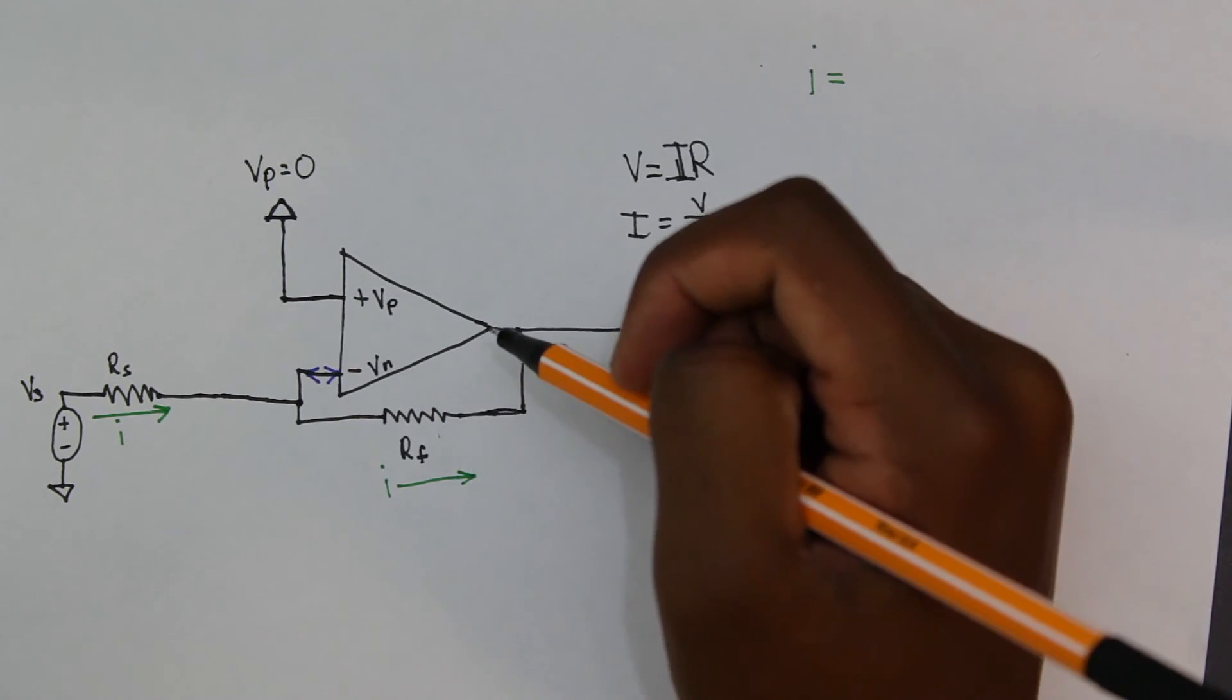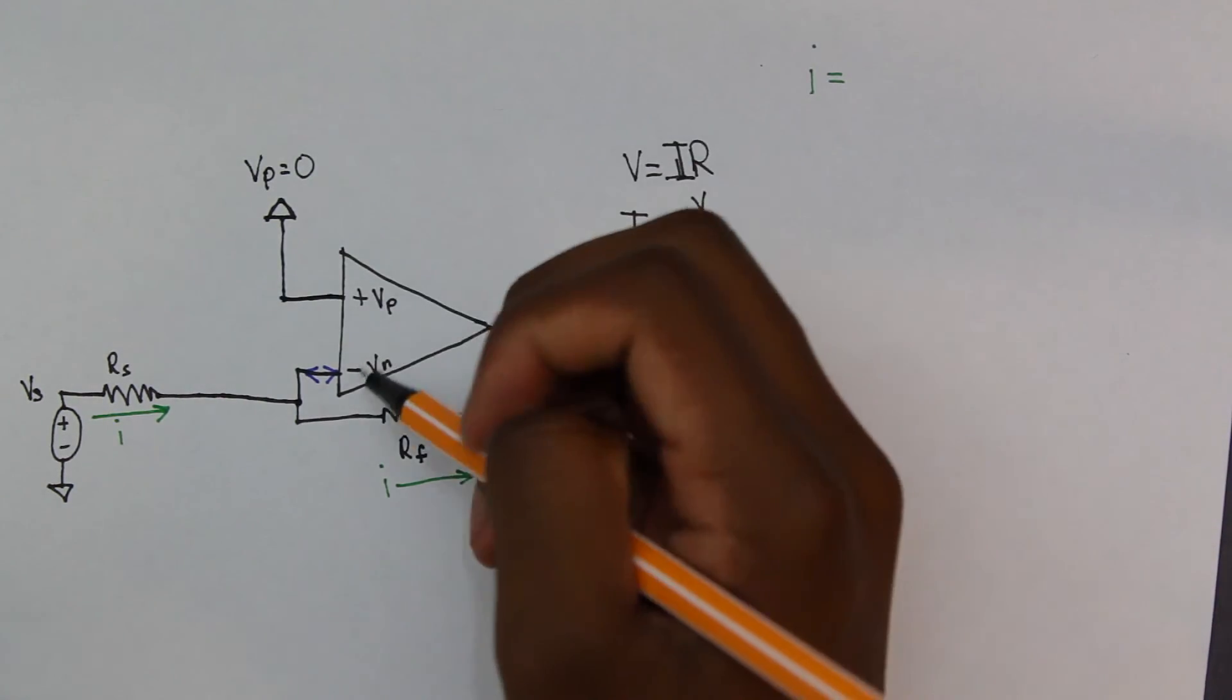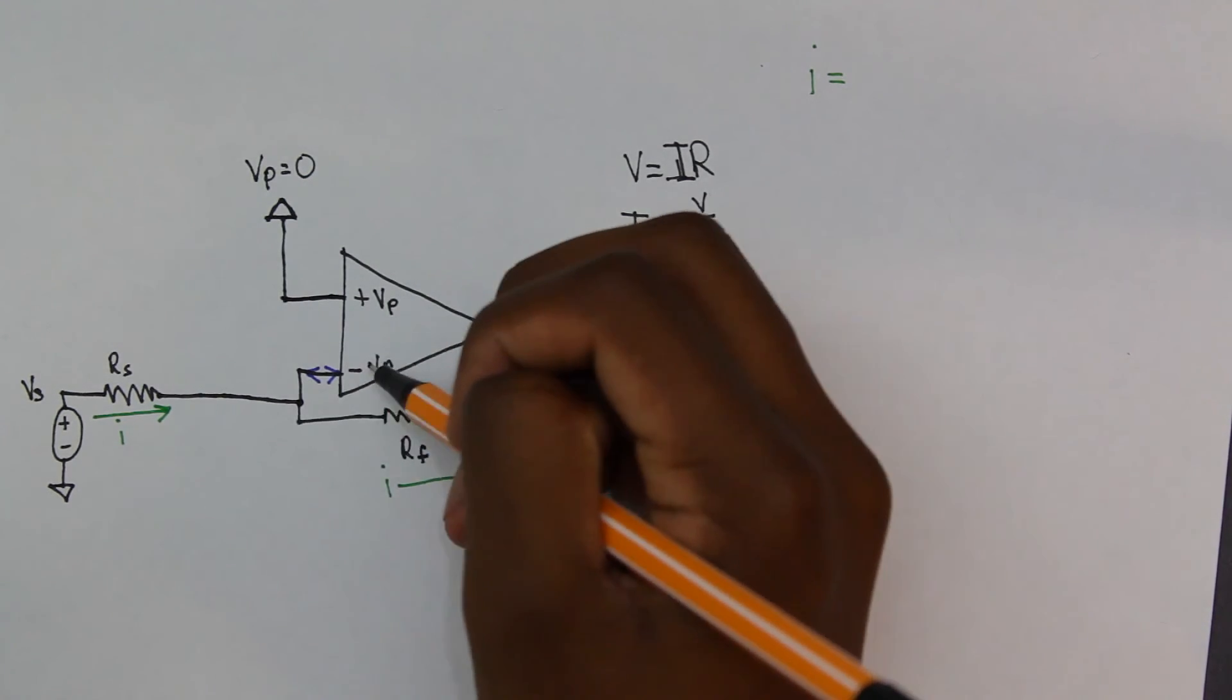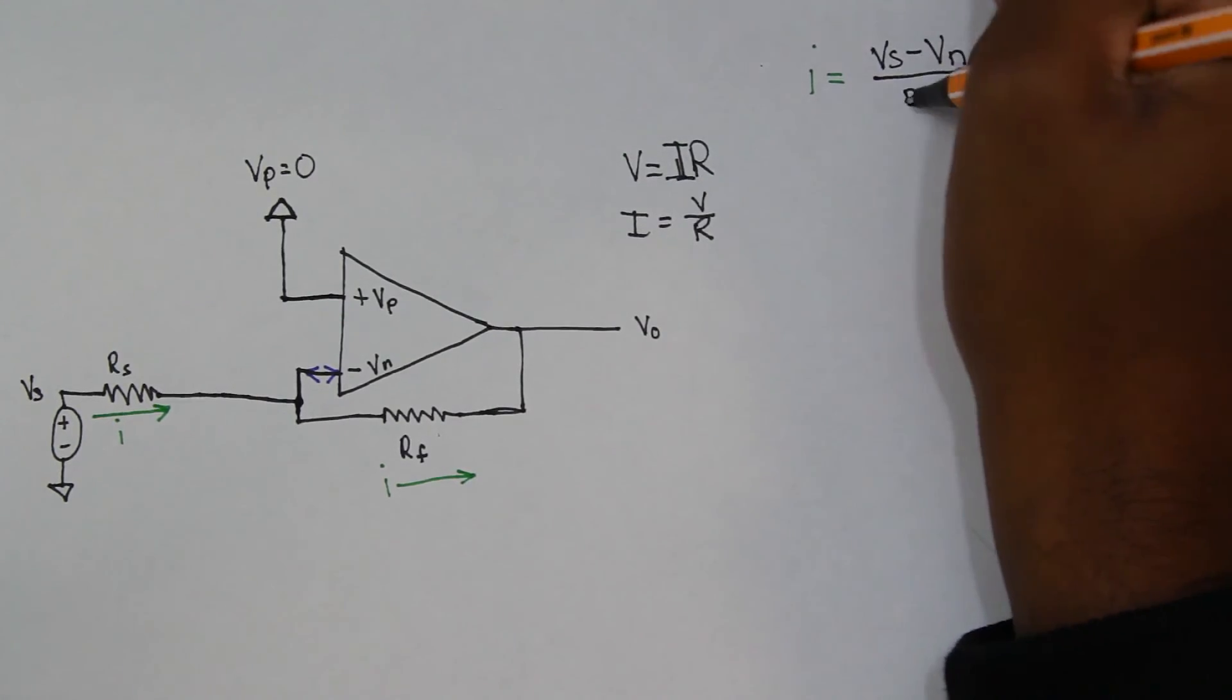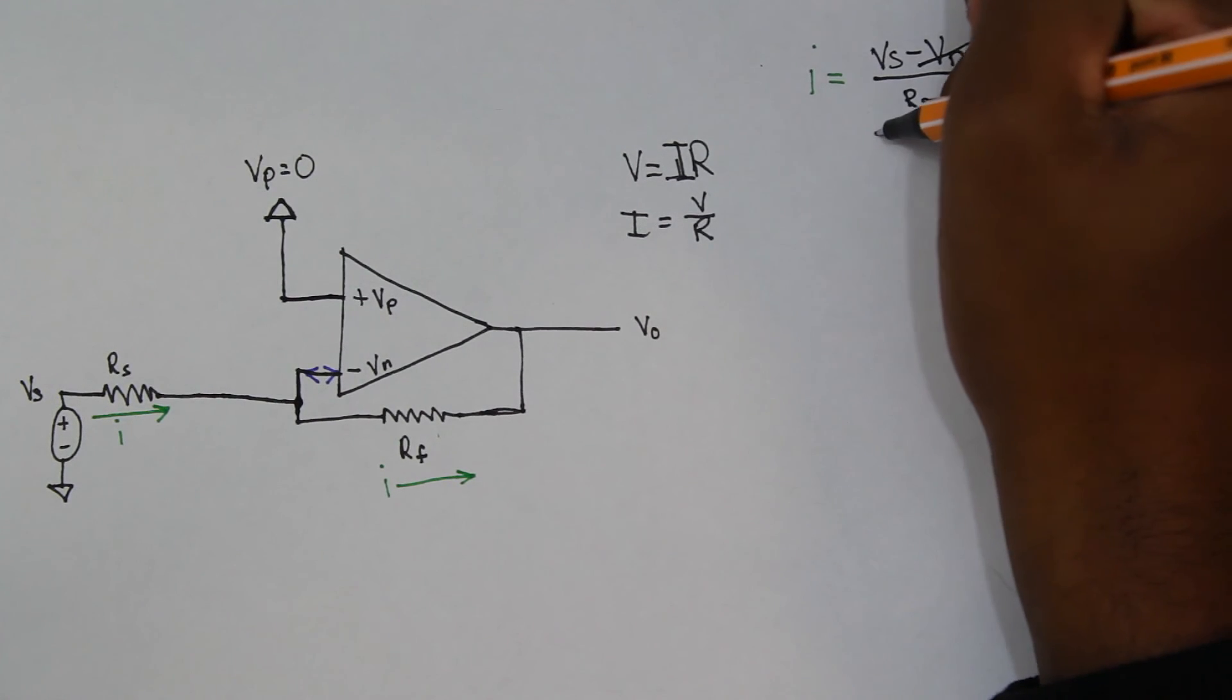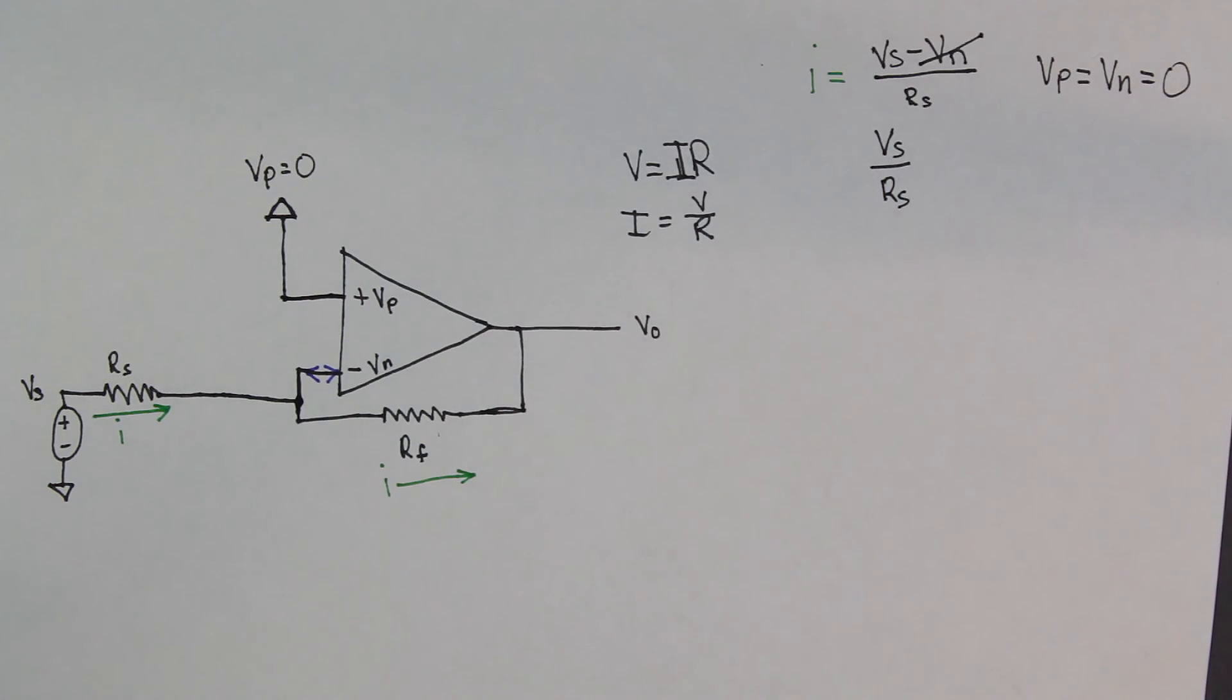So now back to defining I. So I is equal to V over R, where V is equal to the voltage on the left side of the resistor minus the voltage on the right side of the resistor. So the voltage on the left side of the resistor is equal to Vs, and the voltage on the right side of the resistor is going to be equal to Vn, which is equal to zero because it's equal to Vp, which is equal to zero. And that's in our ideal op-amp rules. So based off this, we know that I is equal to Vs over Rs.